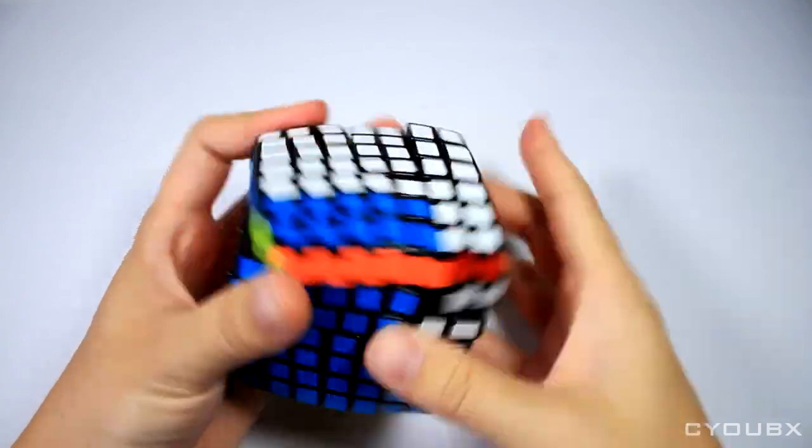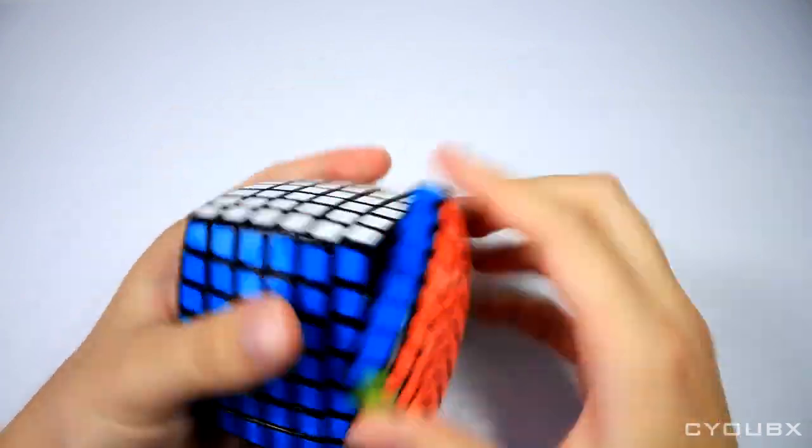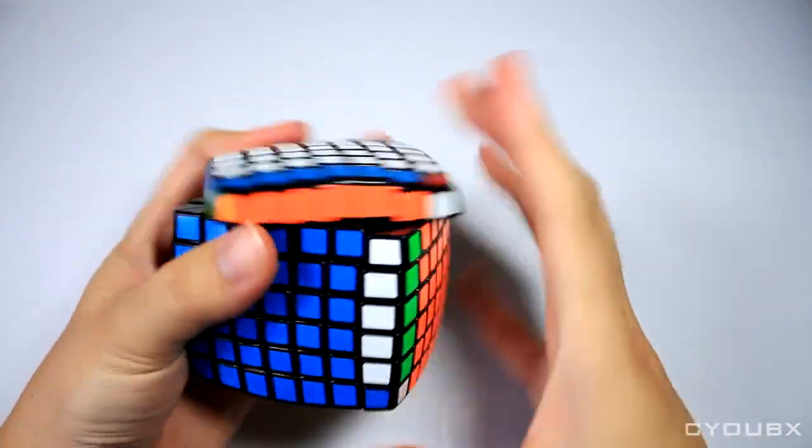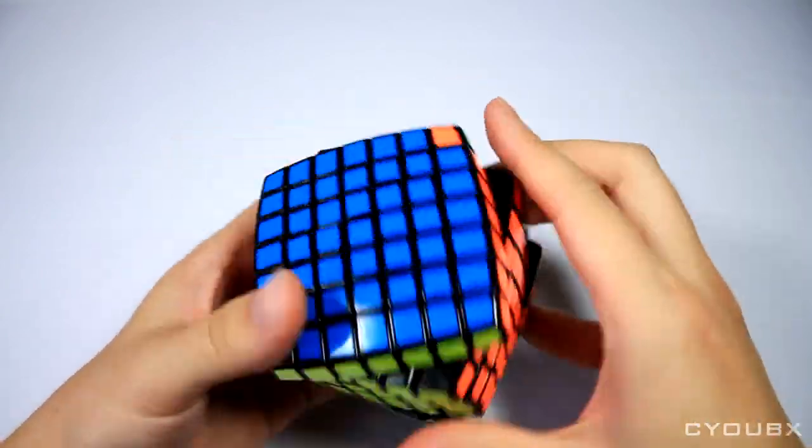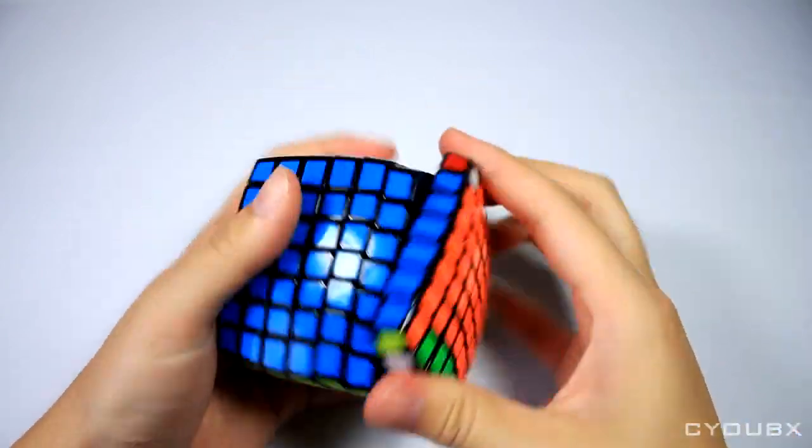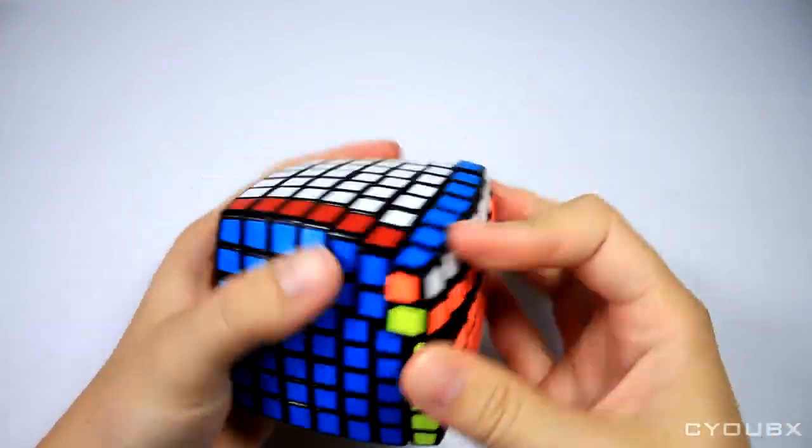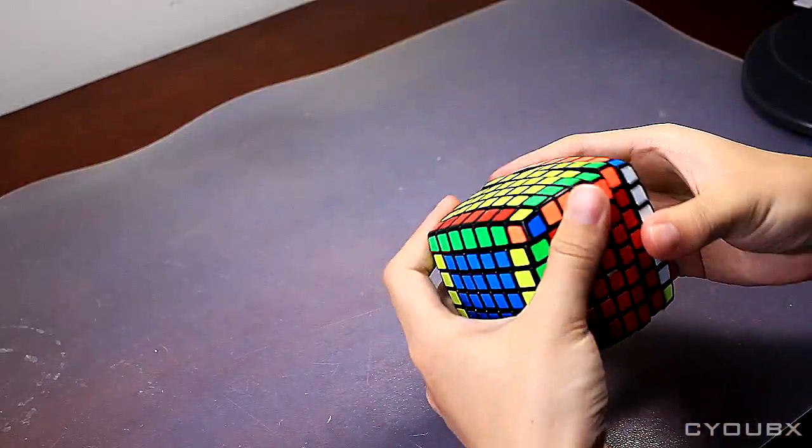After tensioning and lubing, the cube feels a lot faster but retains the nice, crispy feel. The inner layers feel looser and all the layers turn evenly except on the faces with the stiffer center pieces. The feel of the cube makes the reduction stage very pleasant, however I found the pillowed shape to hinder 3x3 stage.